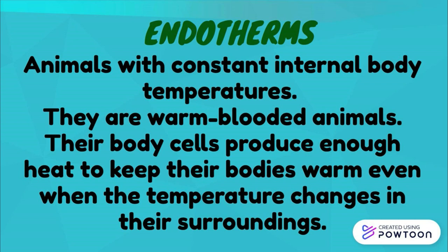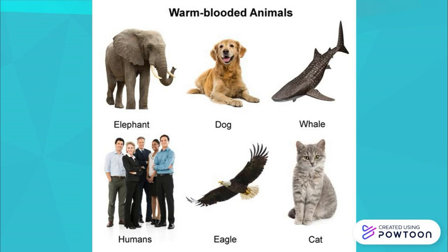Endotherms are animals with constant internal body temperatures — they are warm-blooded animals. Their body cells produce enough heat to keep their bodies warm, even when the temperature changes in their surroundings. Examples of warm-blooded animals are elephant, humans, dog, eagle, whale, and cat.